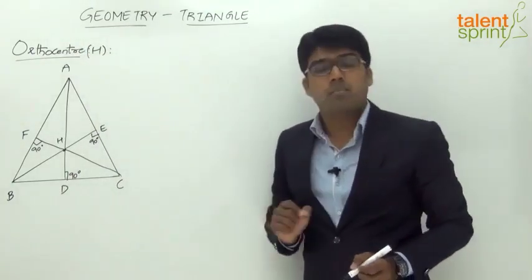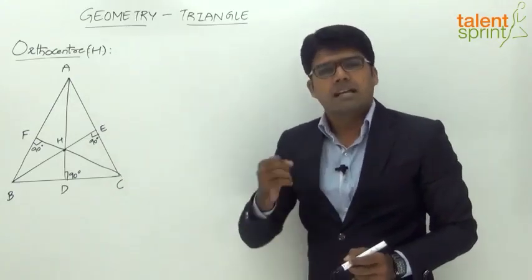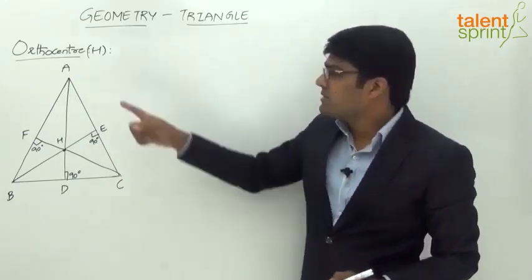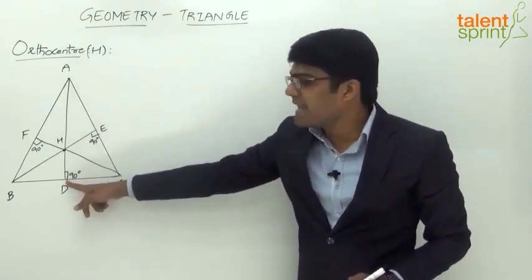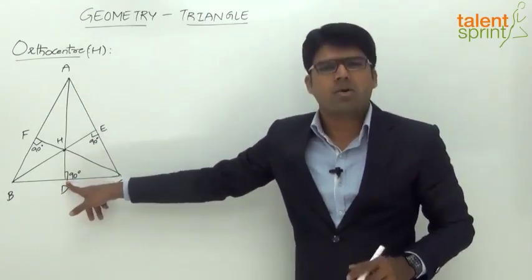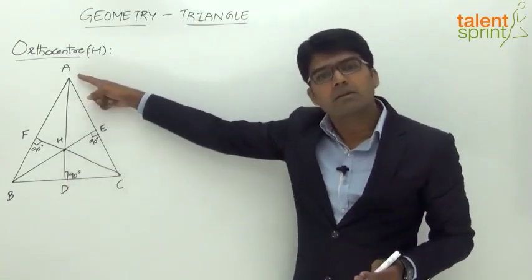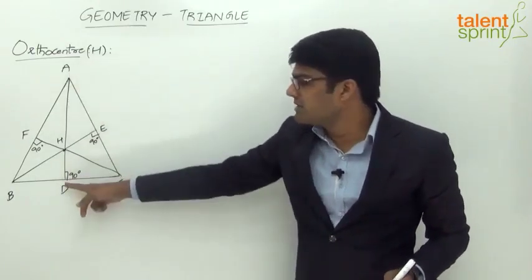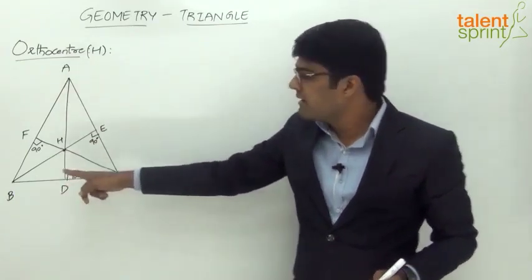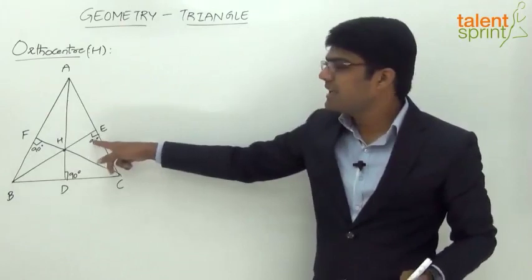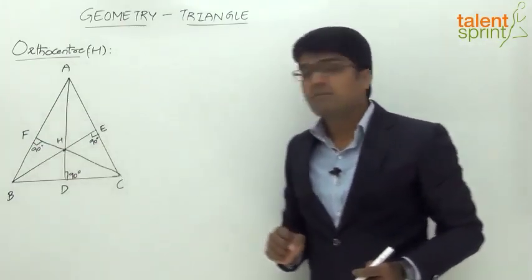All three altitudes meet at a common point known as the orthocenter, which is generally denoted by the letter H. In simple words, the orthocenter is the point of intersection of the three altitudes, where each altitude is a perpendicular drawn from a vertex to the opposite side making an angle of 90 degrees.